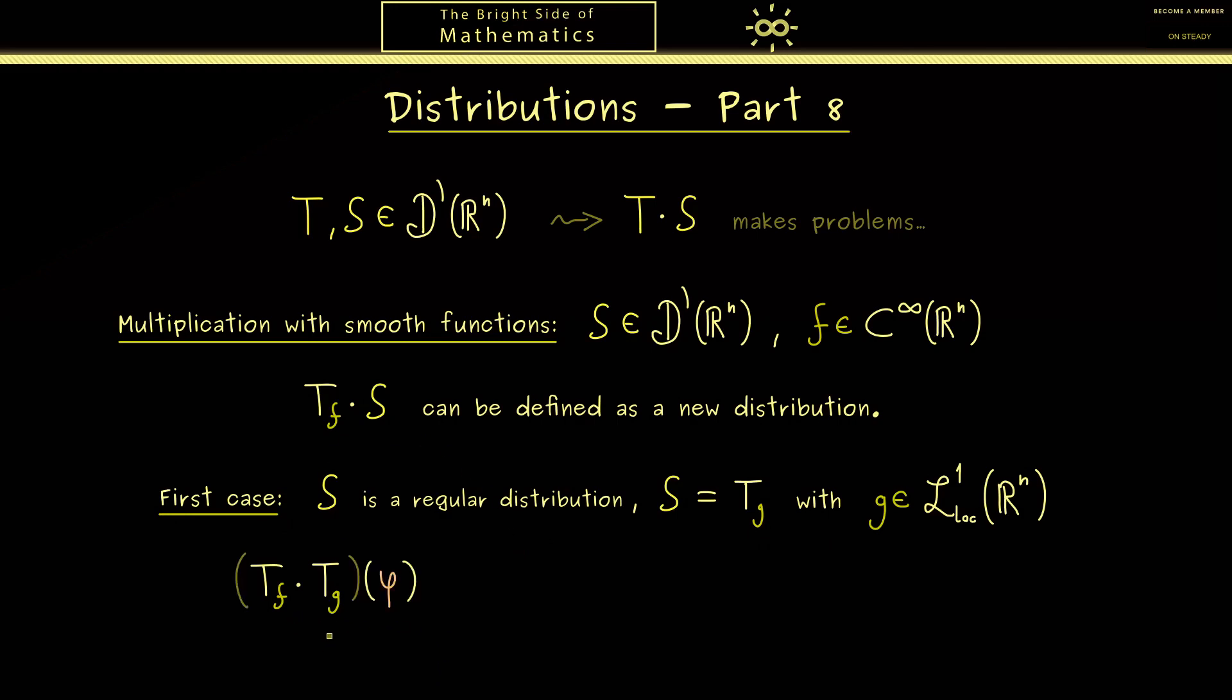And of course as often we look what happens when we put in a test function φ. OK, now in the spirit of the last video, we know this should be compatible to the product of the functions f and g. Hence at this point we can just say that this should be the same as the distribution T_{f·g}. And then obviously the advantage we have now is that we can rewrite this as an integral. Now by the definition of the distribution, this is simply the integral of f times g times φ.